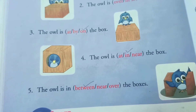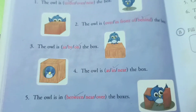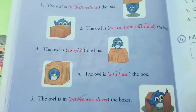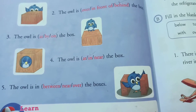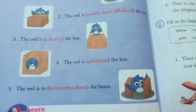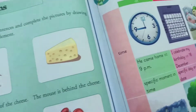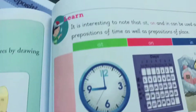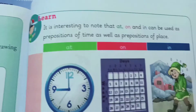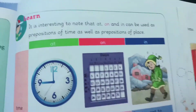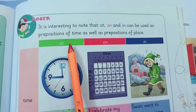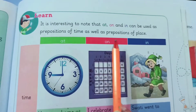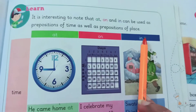Now we will study one thing. We will look at three prepositions: at, on, and in. Let's see where each of these is used.